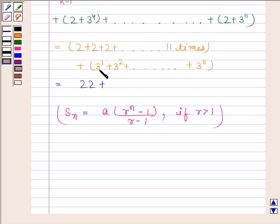Now, here, the first term, that is A is equal to 3 and R is also equal to 3 since on dividing 3 to the power 2 by 3 to the power 1 we get 3 and number of terms is 11.